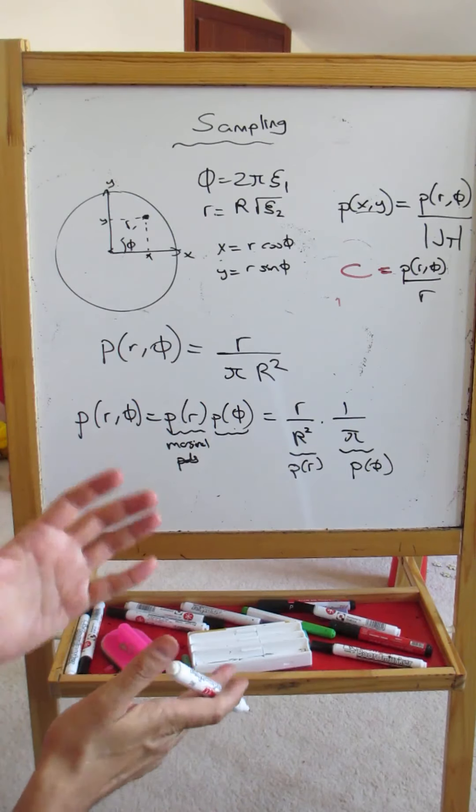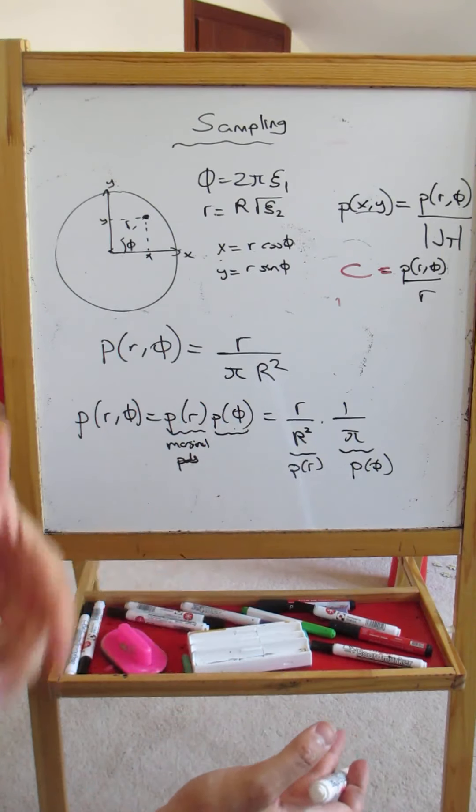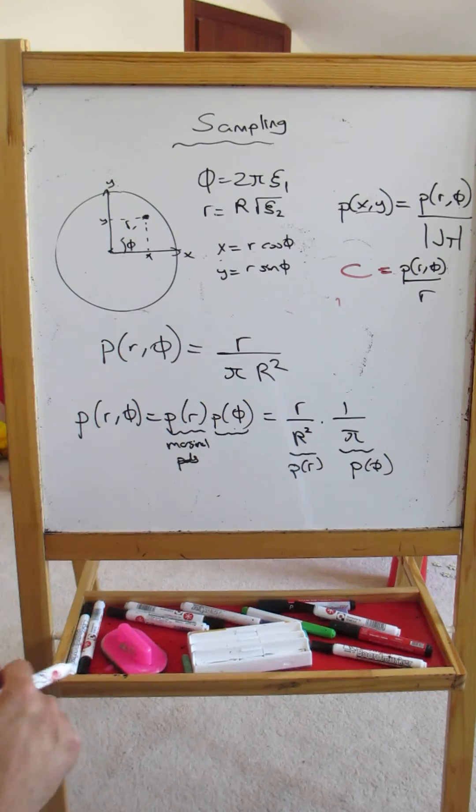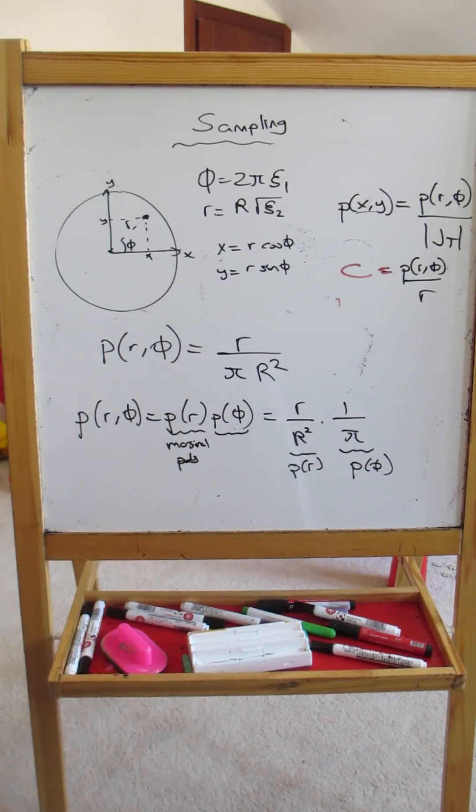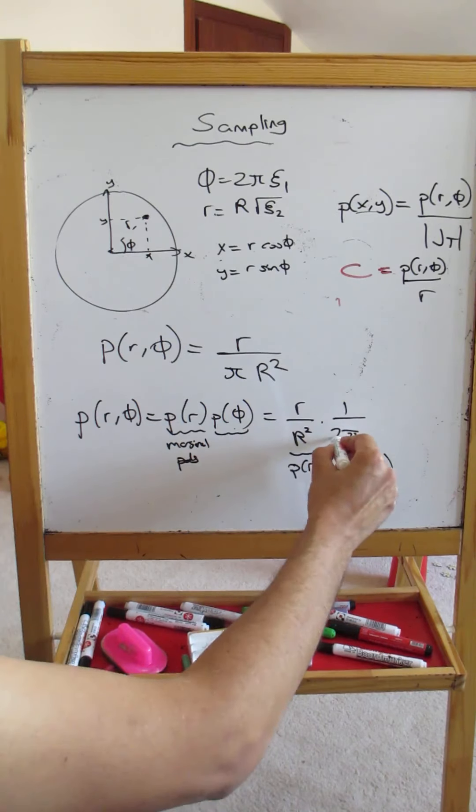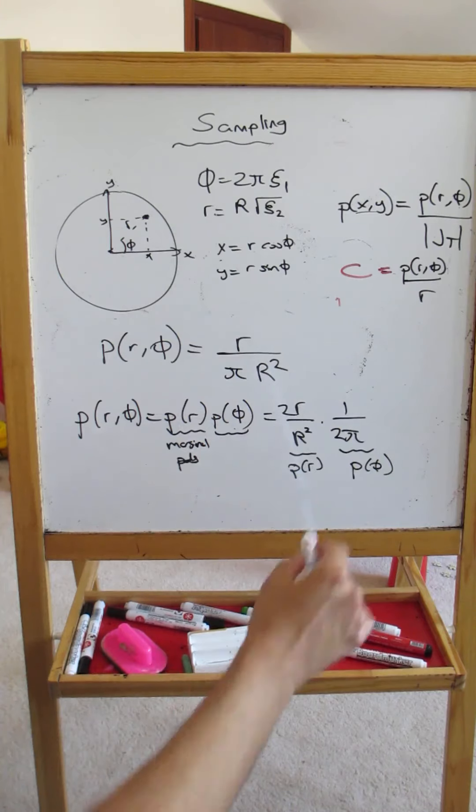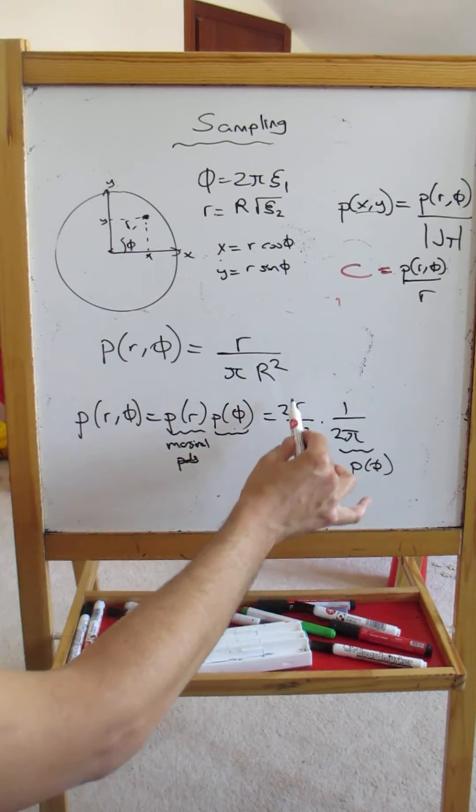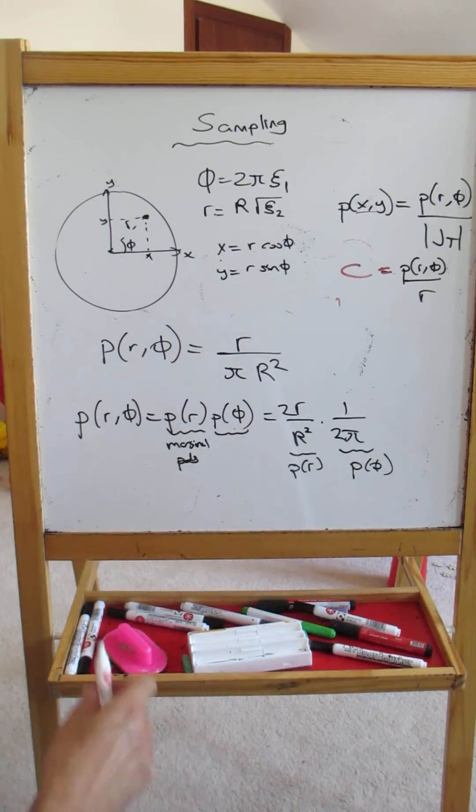If you integrate this from zero to 2π it's going to give you 2 instead of giving you 1. So to correct for this we write 2 here and 2 here. Now you can verify yourself that if you integrate this one from zero to 2π you'll get 1, and also if you integrate this one from zero to R you will get 1.